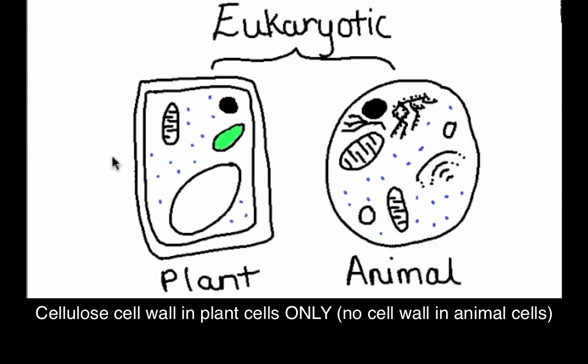The first difference comes right here where you have the cellulose cell wall in a plant cell. The animal cell does not have a cellulose cell wall.